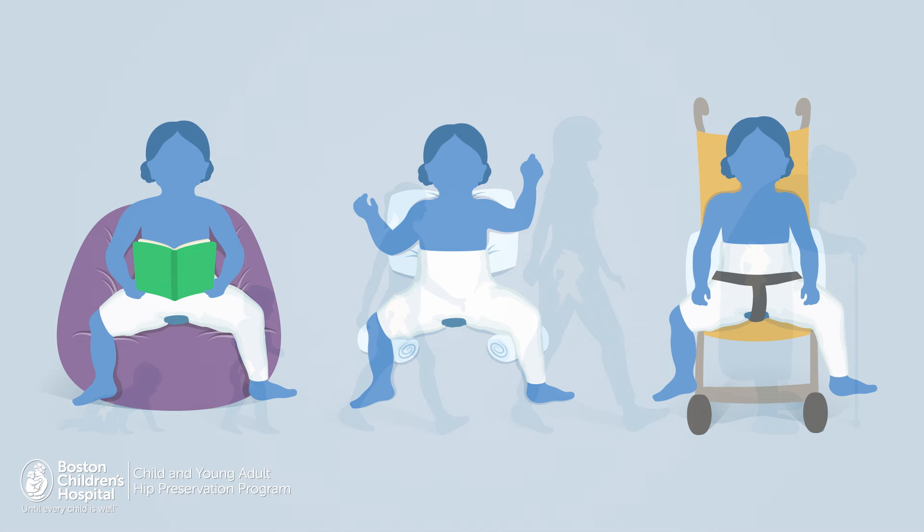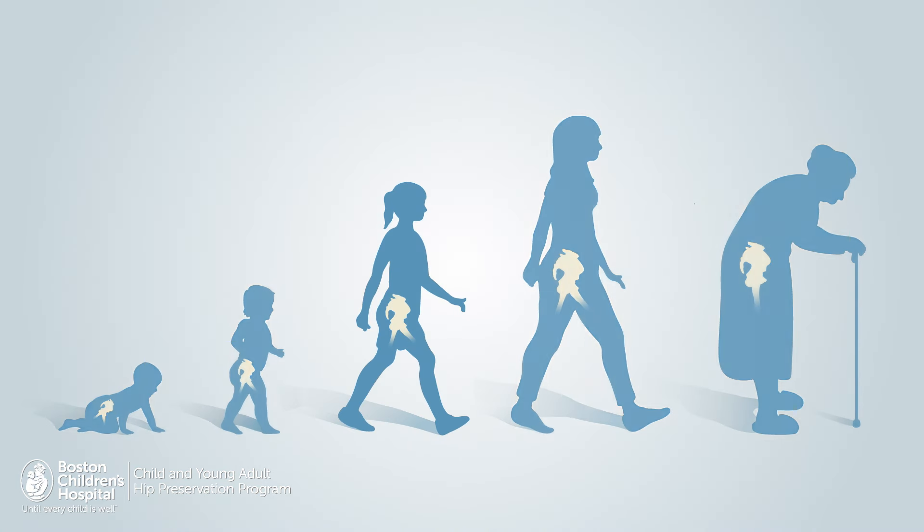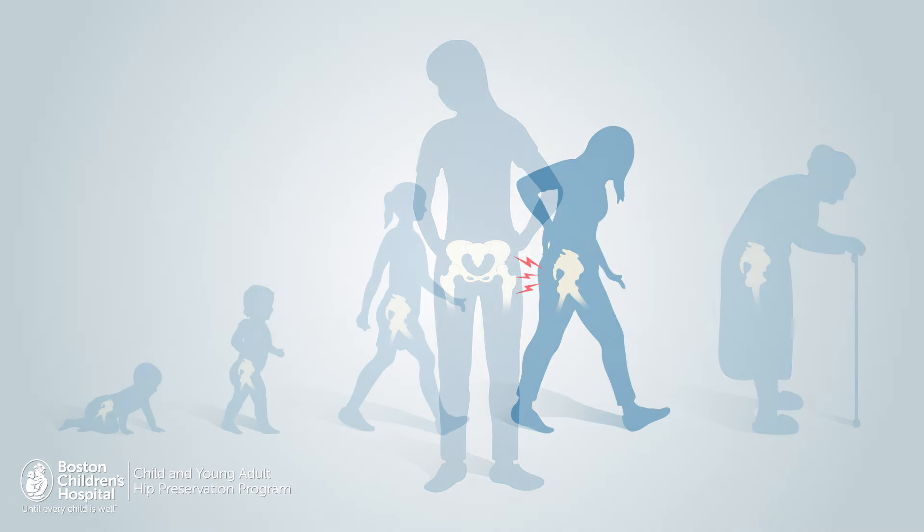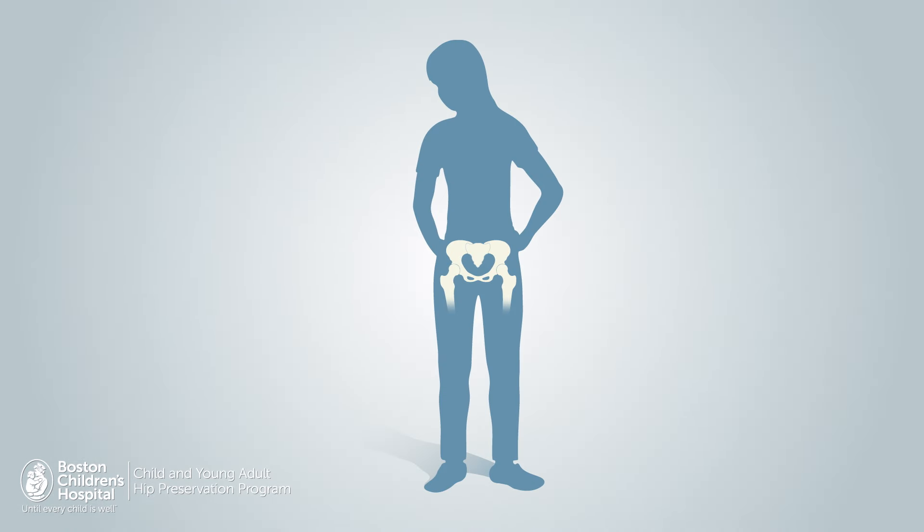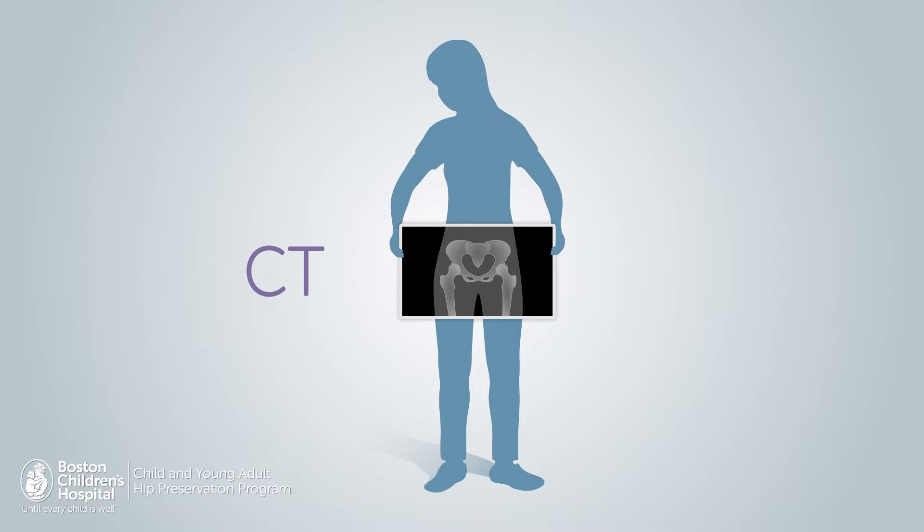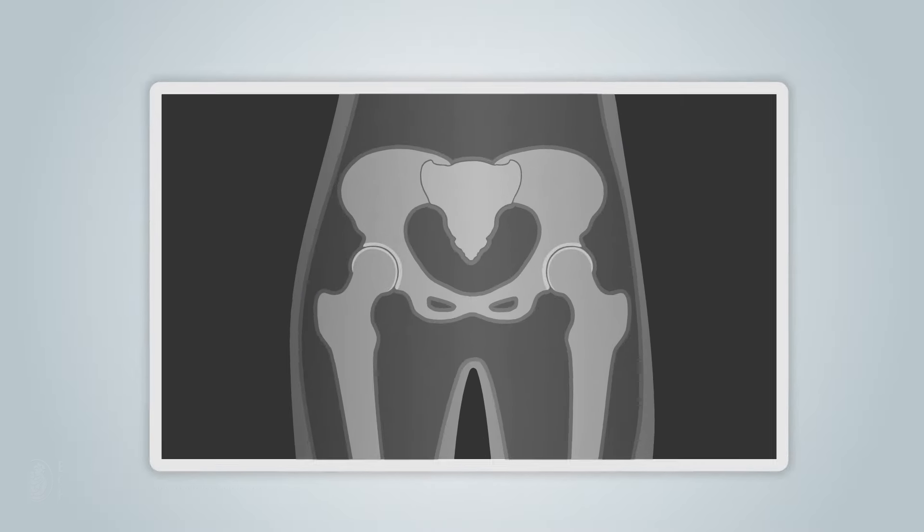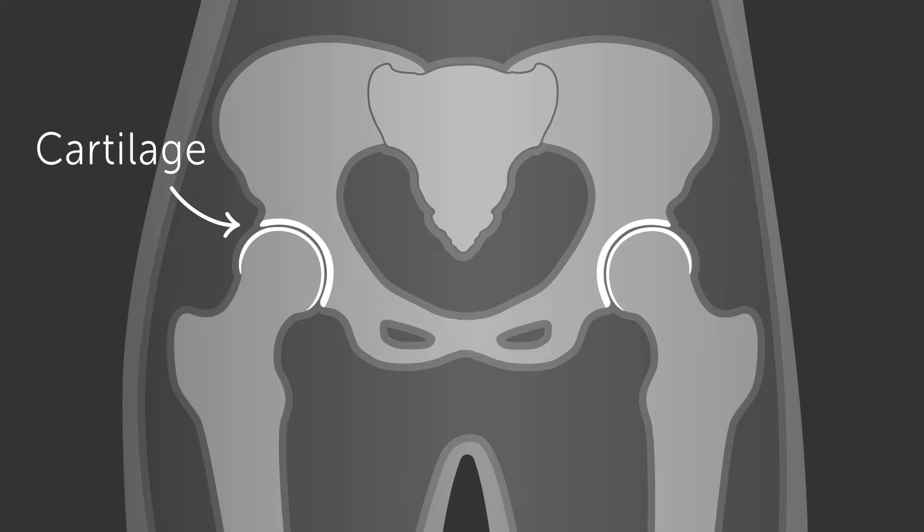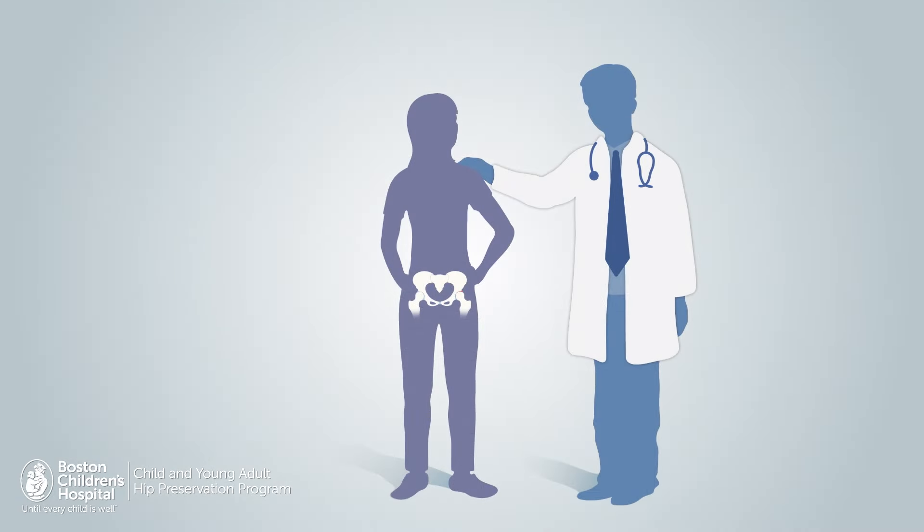Hip dysplasia may go undetected until adolescence or early adulthood, when it often presents itself with pain. Our team of orthopedic hip preservation specialists will order tests including x-rays, as well as CT and MRI scans, in order to help determine the health of the hip cartilage, whether the labrum is still intact or torn, and decide on the best treatment for you or your child's hip.